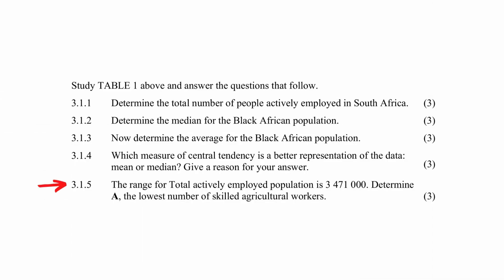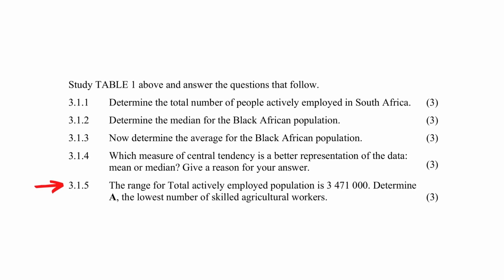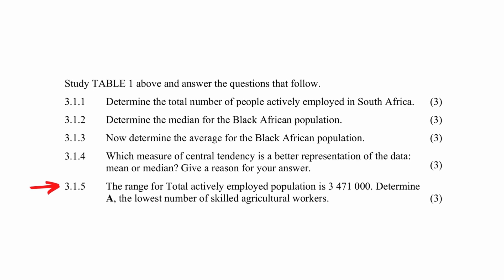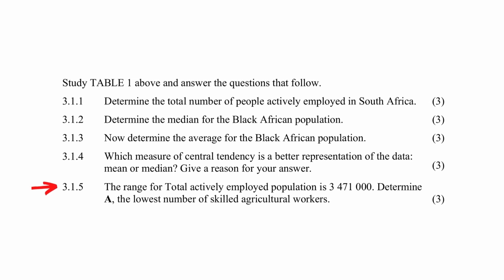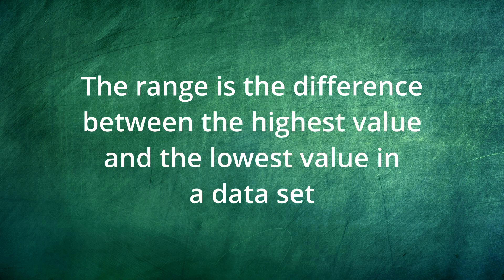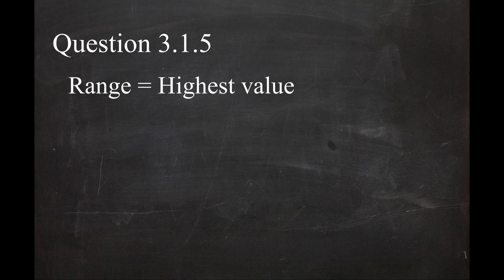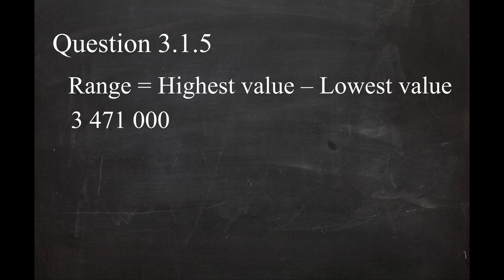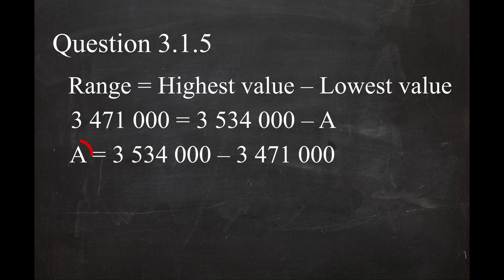In question 3.1.5 you are given the range of the total actively employed population. You have to determine A, which is the lowest number in the data set and is represented by the profession of skilled agricultural workers. The range is the difference between the highest value and the lowest value, so the equation is: highest value minus lowest value. Substituting the range of 3,471,000 and the highest value of 3,534,000 and rearranging the equation gives you the lowest value of 63,000.